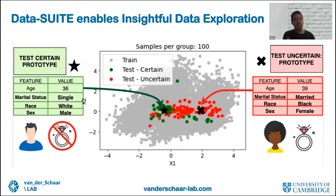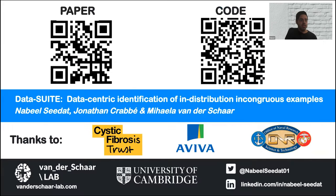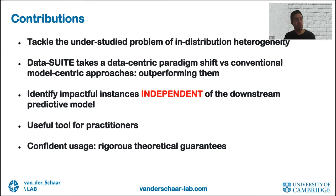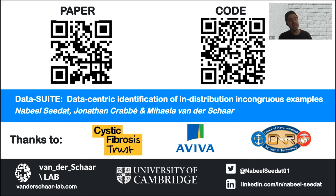DataSuite also enables insightful data exploration — the certain and uncertain groups can represent different demographic groups, allowing practitioners to understand the limitations of their dataset and identify regions that might be problematic. In conclusion, DataSuite tackles the understudied problem of in-distribution heterogeneity with a data-centric paradigm shift compared to the model-centric approach, and actually outperforms model-centric counterparts. We can identify impactful instances independent of a downstream predictive model, and provide rigorous theoretical guarantees. Please engage with our paper and with the data-centric agenda.